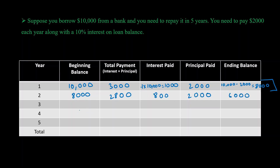Similarly, the beginning balance in year three is six thousand dollars. Ten percent interest on six thousand is six hundred dollars. We again pay two thousand dollars in principal, so the total payment is twenty-six hundred dollars. The ending balance becomes six thousand minus two thousand, equal to four thousand dollars. Hopefully you're getting the hang of this — try pausing and filling up the rest of the table yourself.